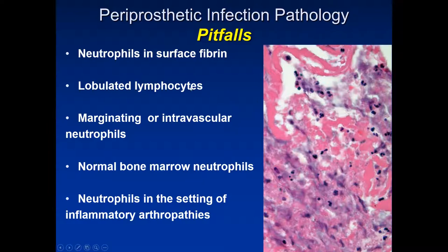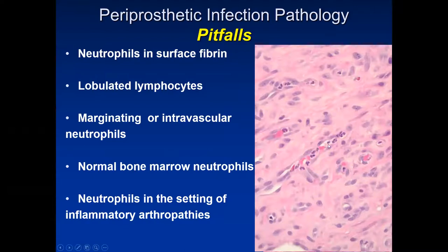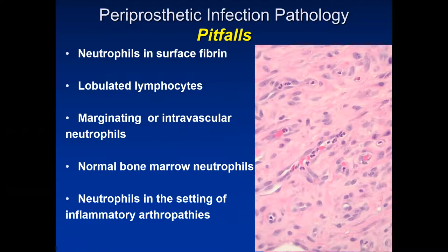Additional pitfalls to avoid: lobulated lymphocytes — especially common on frozen sections — do not count as neutrophils. If you do not see a definite neutrophil, it doesn't count. Intravascular neutrophils or neutrophils lining vessel walls do not count toward the histologic criteria. Be especially careful of neutrophils associated with bone marrow — when you get bone fragments with very cellular areas, make sure you are not looking at bone marrow, as this is an easy pitfall for over-calling periprosthetic joint infection. Also be careful with inflammatory arthropathies such as rheumatoid arthritis, where active disease may also produce tissue neutrophils.